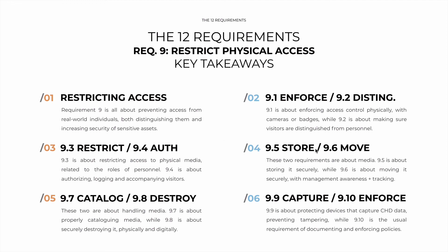9.5 and 9.6 are about physical media: 9.5 is about storing it securely with physical protection measures, while 9.6 is about moving it securely with both management awareness and tracking of the transportation medium. 9.7 is about inventorying media — cataloging it so that you immediately know if something is missing or was compromised. While 9.8 is about securely destroying media: when not needed, it must be disposed of with a certificate.